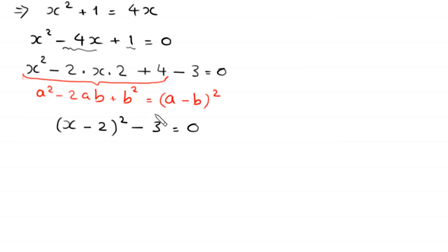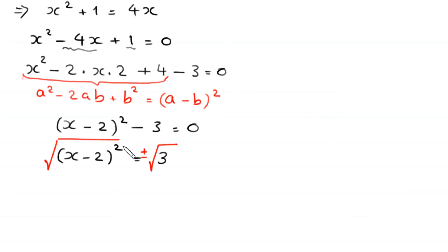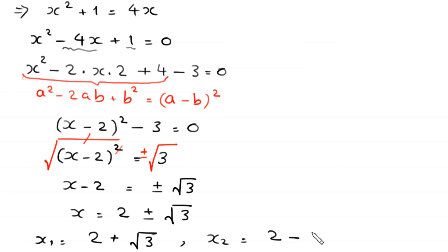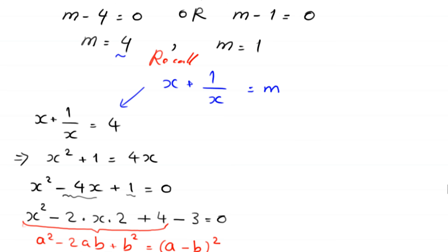So x² minus 2 times x times 2 plus 2² becomes (x minus 2)² minus 3 equals 0. Moving negative 3 to the right-hand side: (x minus 2)² equals 3. Taking the square root of both sides gives x minus 2 equals plus or minus root 3, so x equals 2 plus or minus root 3. This gives x₁ equals 2 plus root 3 and x₂ equals 2 minus root 3.